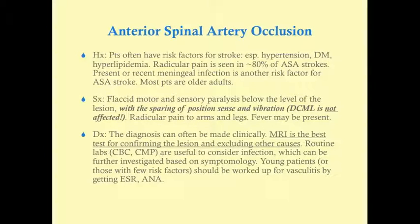As for diagnosis, because of the very conspicuous symptomology — loss of motor and spinothalamic pathways but preservation of DCML — the diagnosis is often clinically obvious. However, it should be confirmed by MRI to exclude other possible causes, including neoplasm. Routine labs should be performed to consider infection as a cause. Younger patients with fewer risk factors should be worked up for vasculitis, which is another possible cause of ASA stroke.